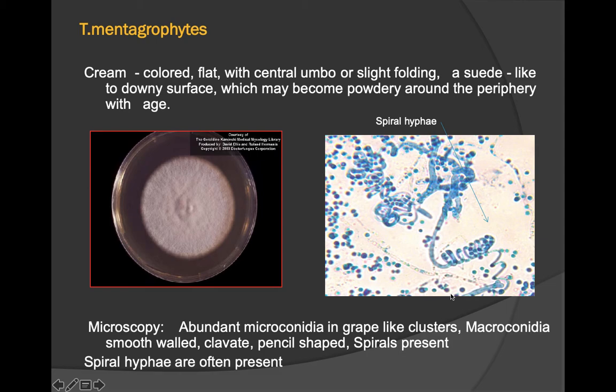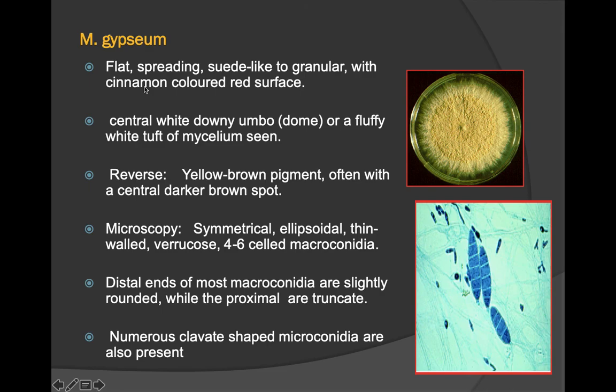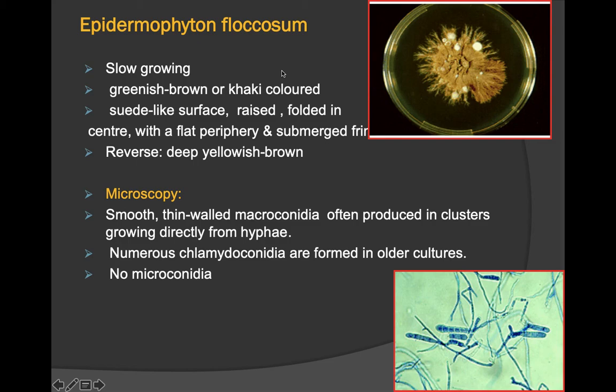Microsporum gypseum has flat, spreading, suede-like colonies with granular appearance; the reverse shows yellow-brown pigmentation, often with a central dark color. Microscopy shows symmetrical ellipsoidal thin-walled macroconidia with four to six cells, and numerous clavate-shaped microconidia.